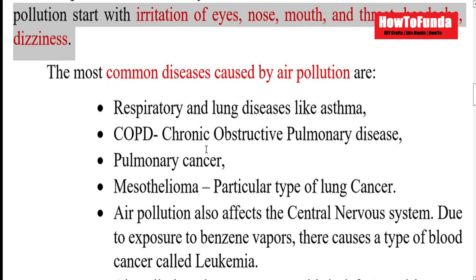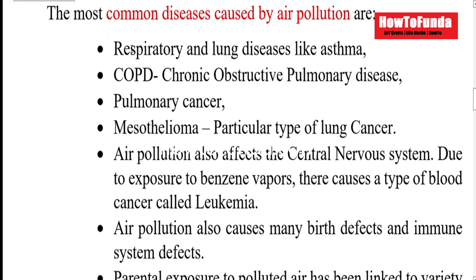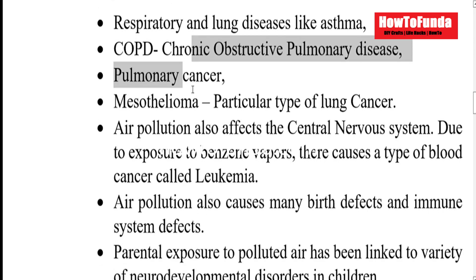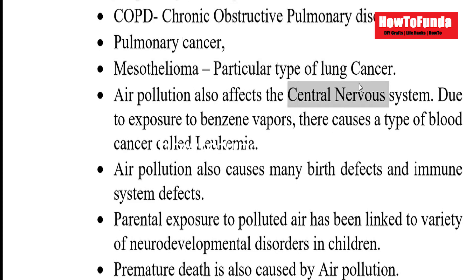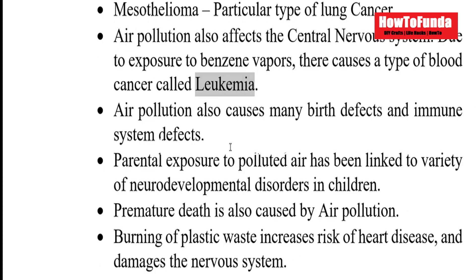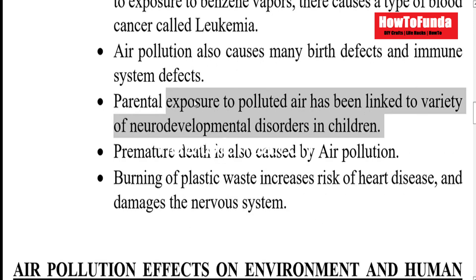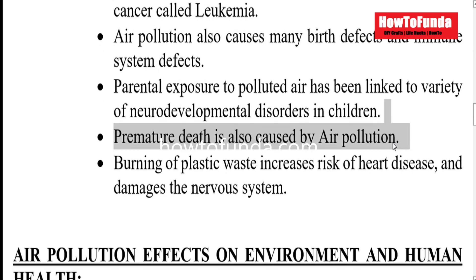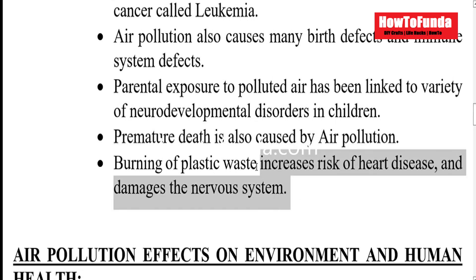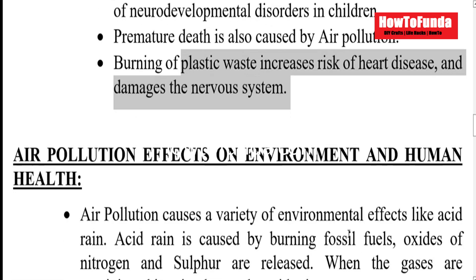There are also major diseases we can get from air pollution, like issues in the respiratory system or lung system, such as asthma. There are also issues like COPD, pulmonary cancer, and even lung cancer. Air pollution can affect your central nervous system. Blood cancer can also happen because of that. Because parents are exposed to air pollution, neurodevelopmental disorders can also happen in children. There are a lot of premature deaths as well, especially in modern cities. Burning plastic waste increases the risk of diseases and damage to our nervous systems.